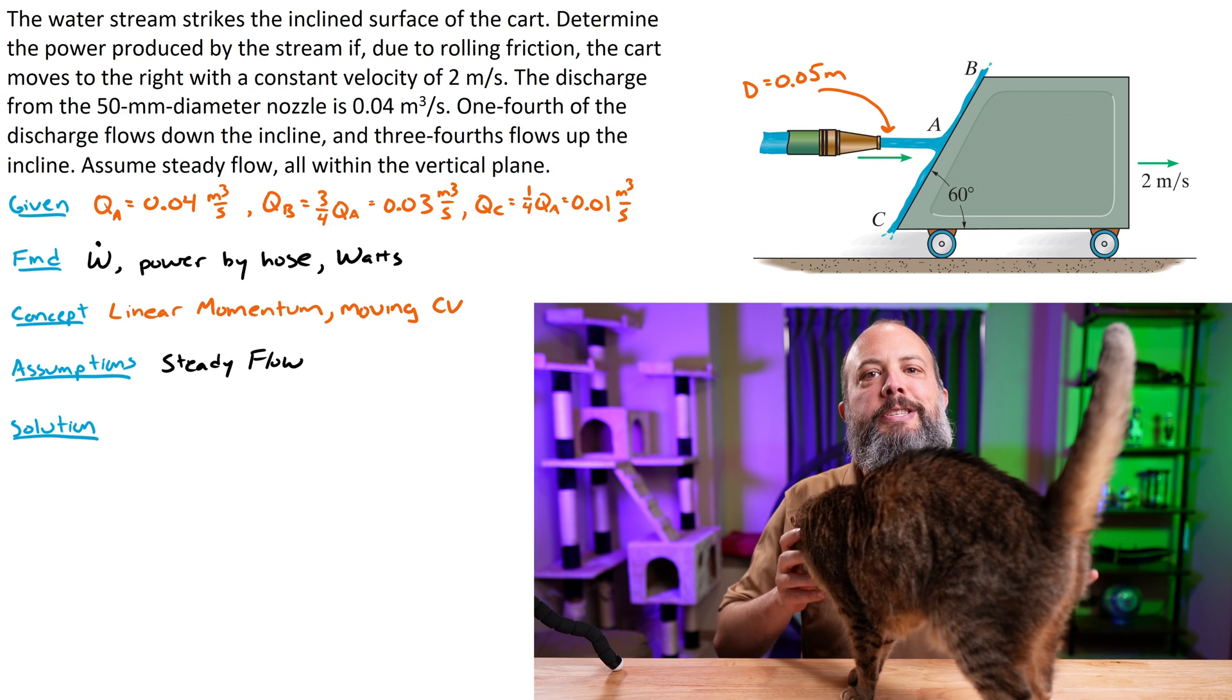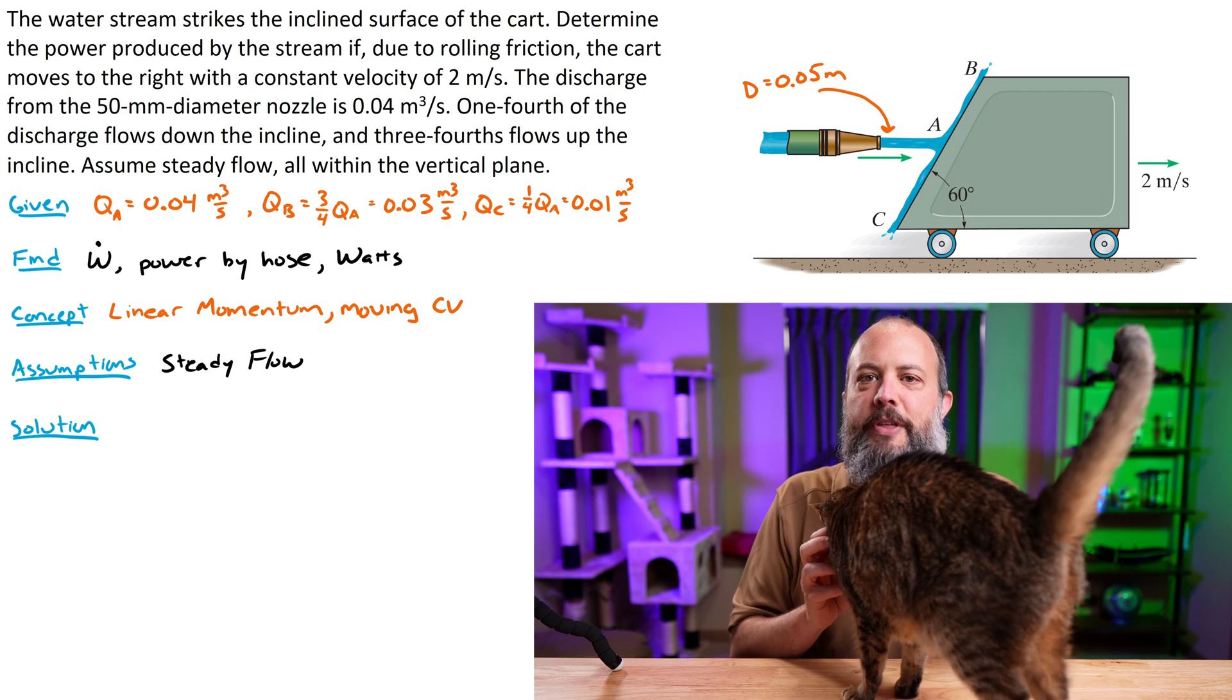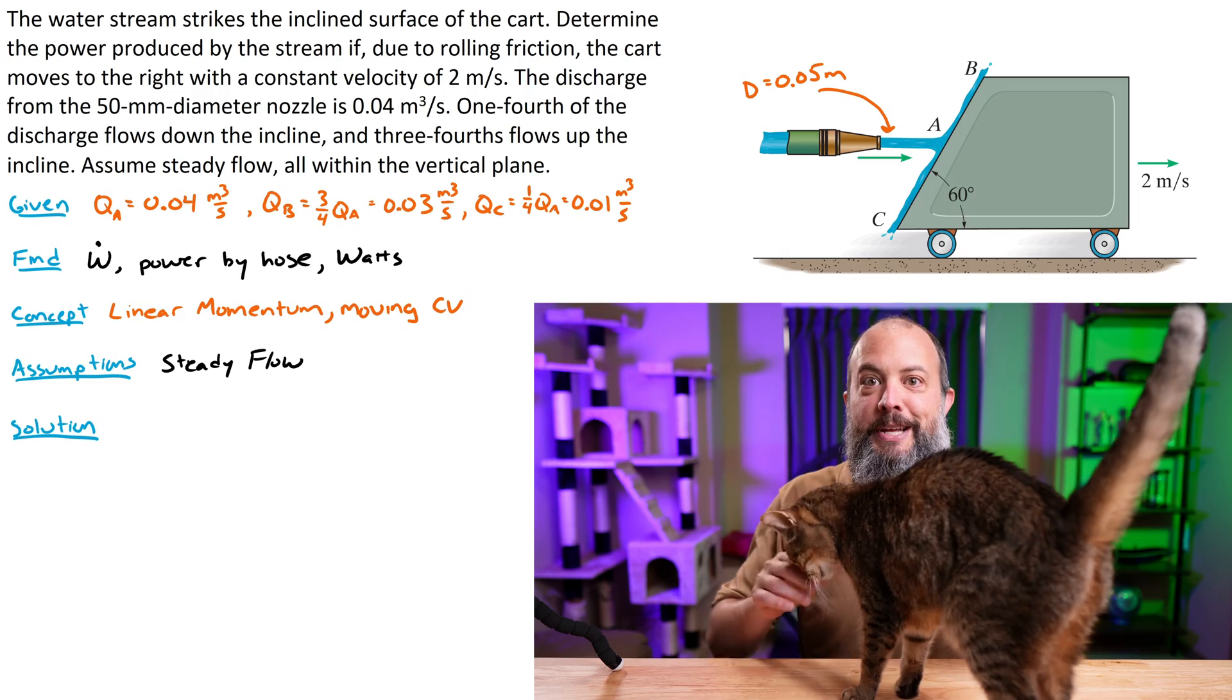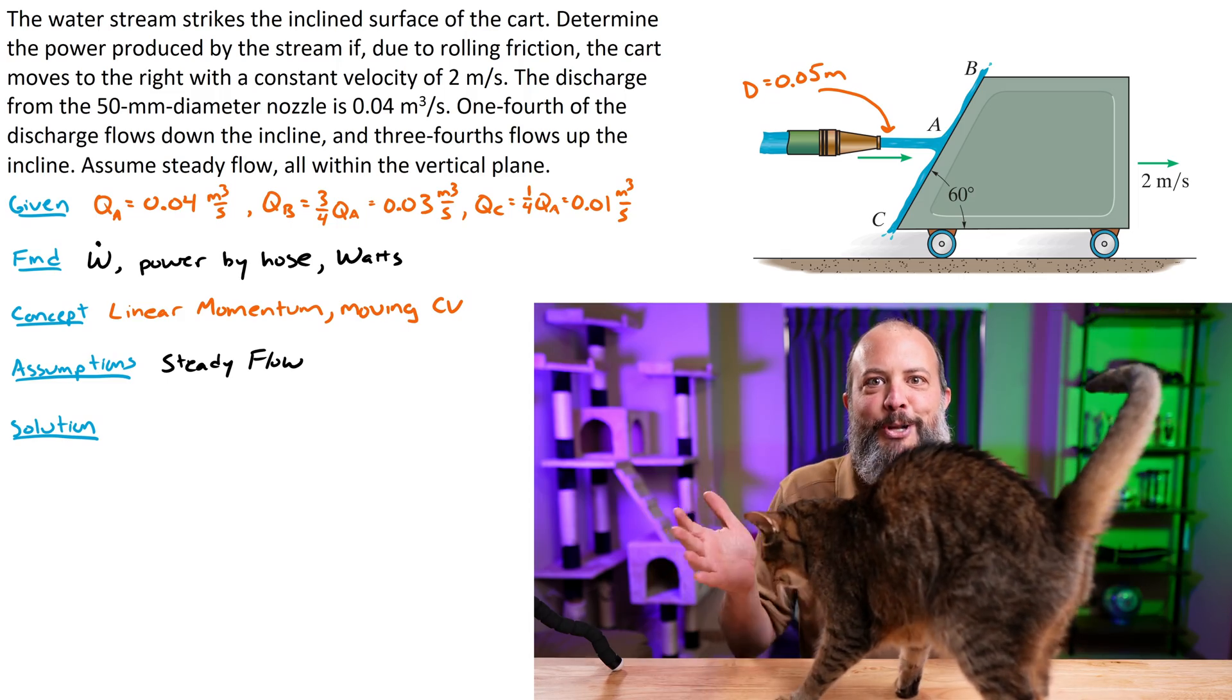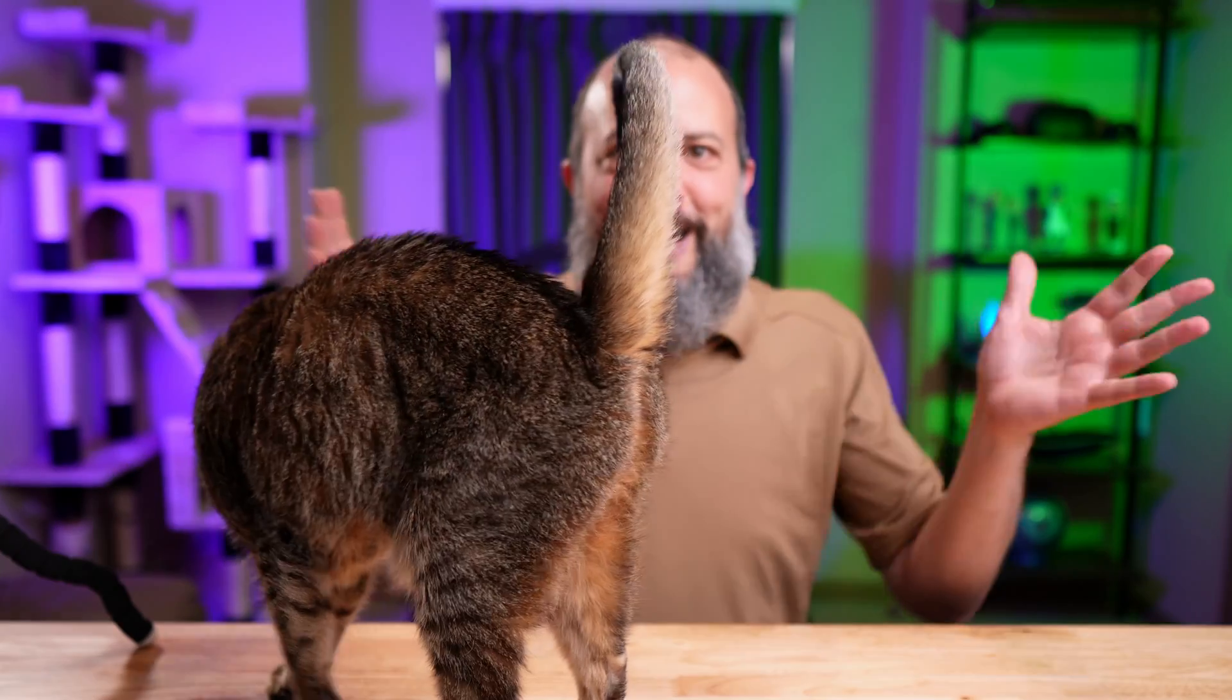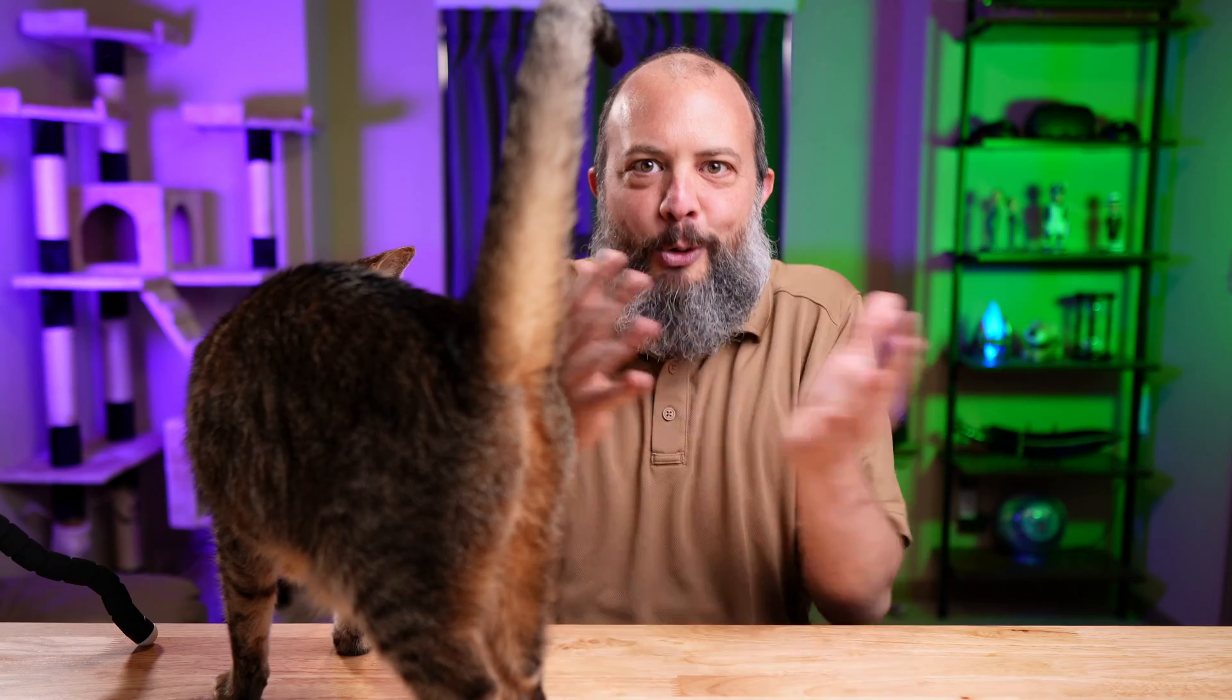The most common mistake that students make on momentum problems with a moving control volume is to forget that the control volume is moving. You'd think that would be impossible to forget. It's the whole point of the problem.